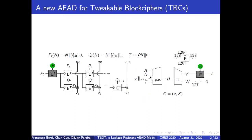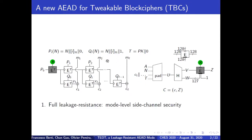In this paper, we design a new authenticating encryption mode TEDT for tweakable block ciphers. Using a tweakable block cipher with 128-bit keys, 128-bit tweaks, and 128-bit blocks like Skinny or Deoxys, the mode TEDT achieves first, full leakage resilience or mode-level side-channel security. It means the implementation of this mode ensures side-channel security without full side-channel protection.